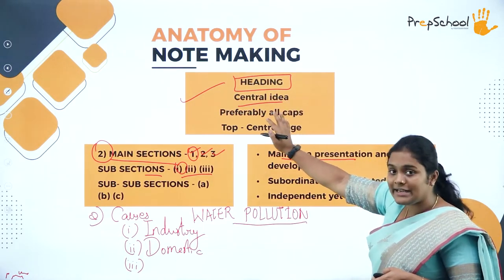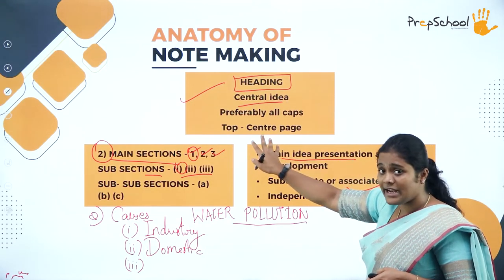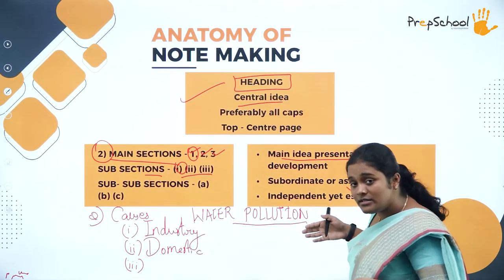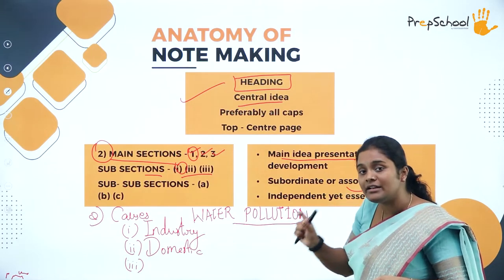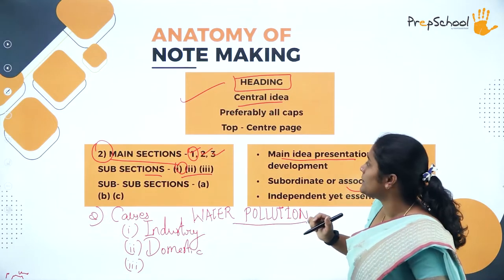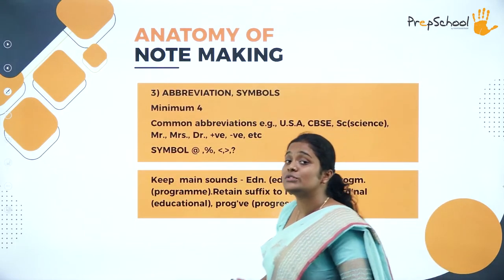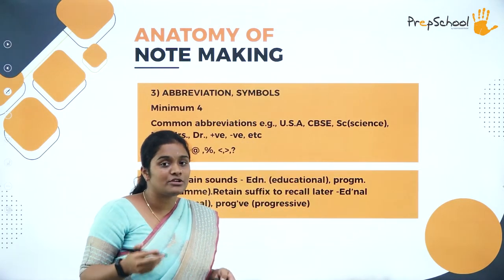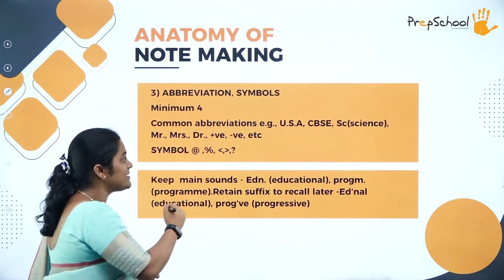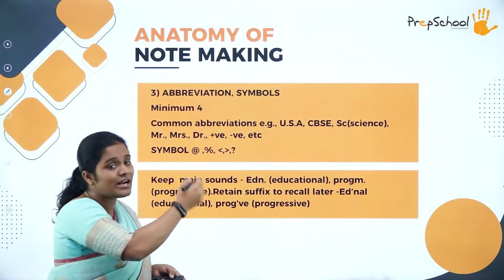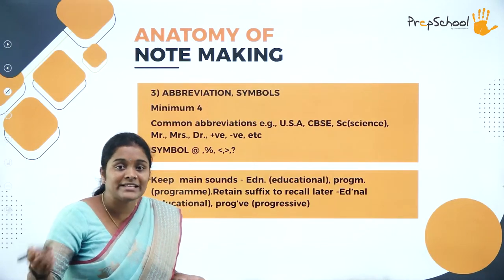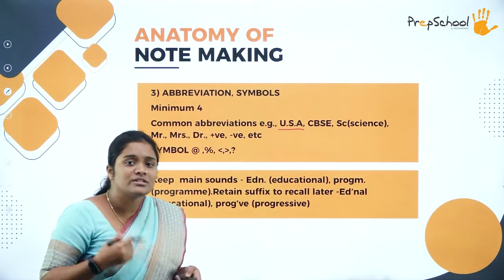To recap: first, read the script and start with the heading at the top center. Then come the main sections — write the script's content in a crisp manner. Once that is done, we move on to the next important part: abbreviations and usage of symbols. Abbreviations are used to save time. You cannot write 'United States of America' when you can just write 'USA.' In your note-making, it is mandatory to use a minimum of four abbreviations.